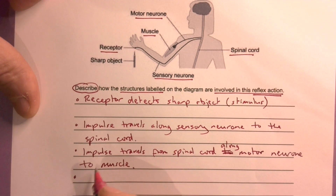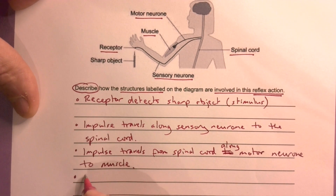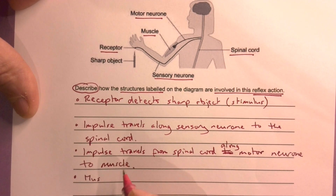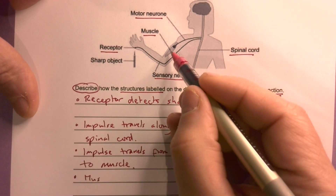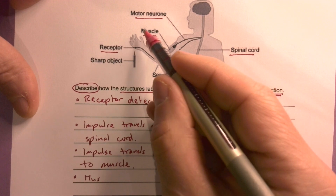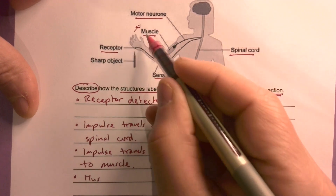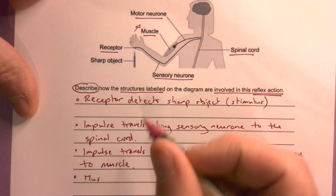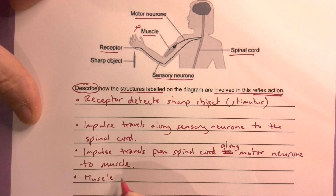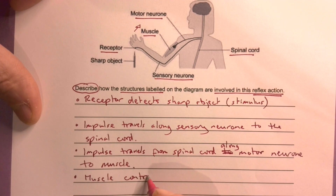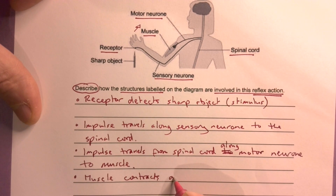The last thing that happens is the muscle — that's the bicep muscle. If the hand moves that way, the muscle contracts and the hand is lifted away.